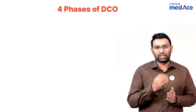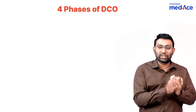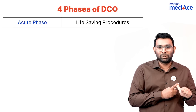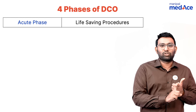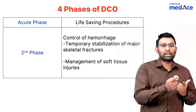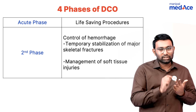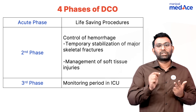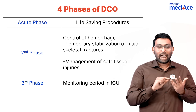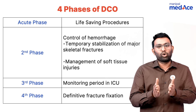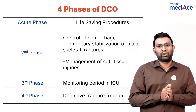DCO is divided into four stages. The first stage of polytrauma is to do only life-saving procedures. The second stage is to do temporary stabilization and soft tissue management. The third stage is to monitor the patient's vitals. And the final stage, once the patient's physiology improves, is to go for definitive fixation. That is about damage control orthopedics. Happy learning.